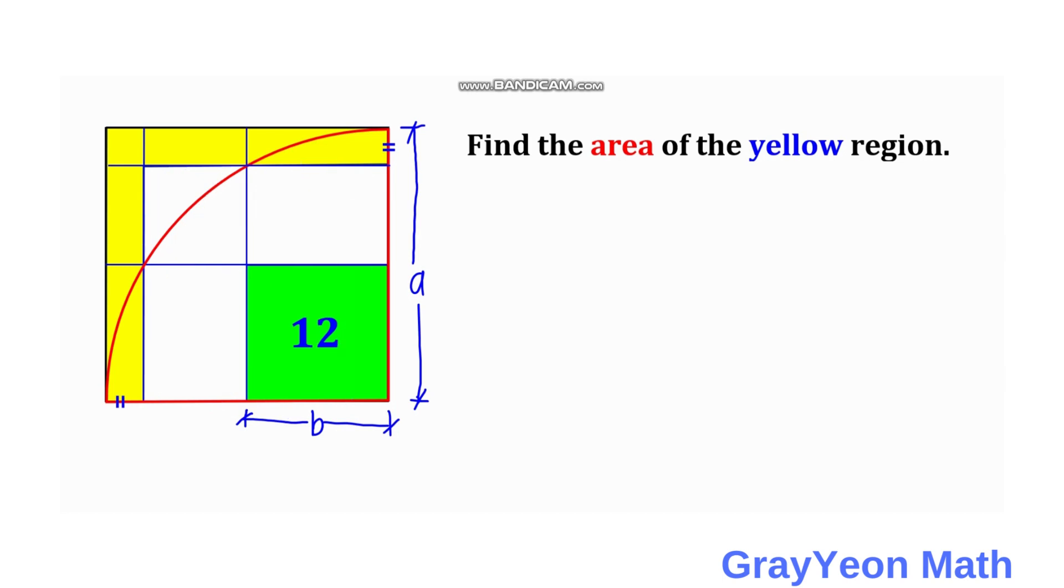So next thing that we have to do is we need to find this length. This length is actually a leg of a right triangle if we draw a line from this point to the center of this quarter circle. And this is actually also A since it is the radius of this quarter circle.